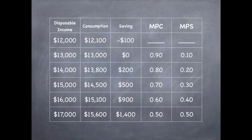Next, we have $15,000 for disposable income, $14,500 for consumption, savings of $500, a change in consumption of 0.70, and a change in savings of 0.30.